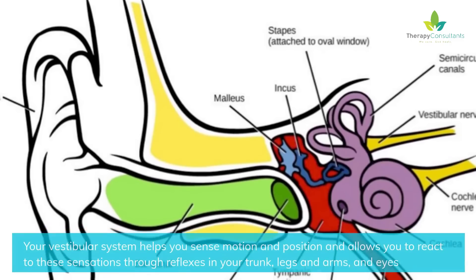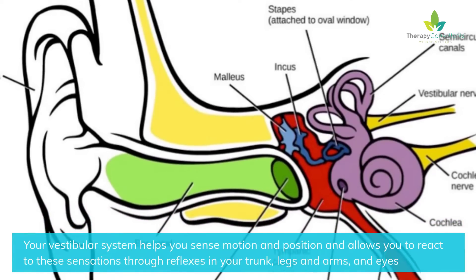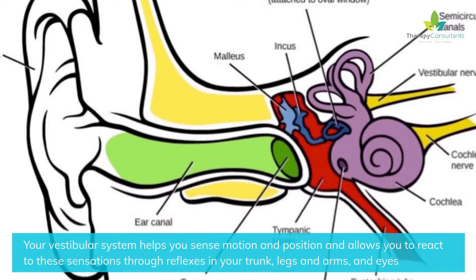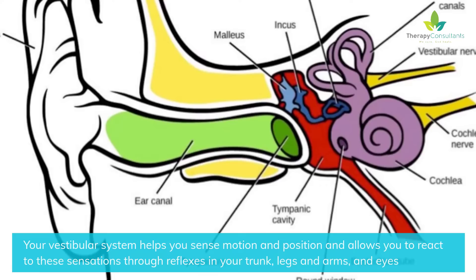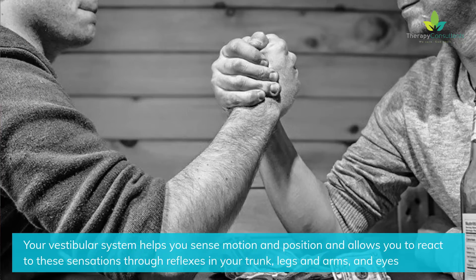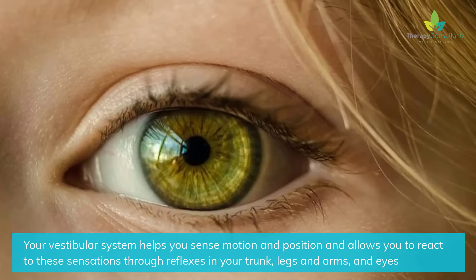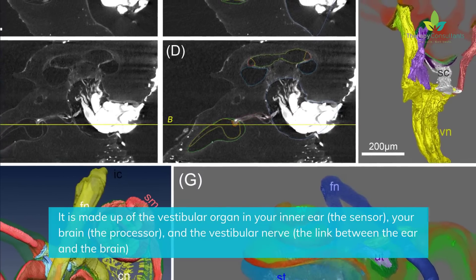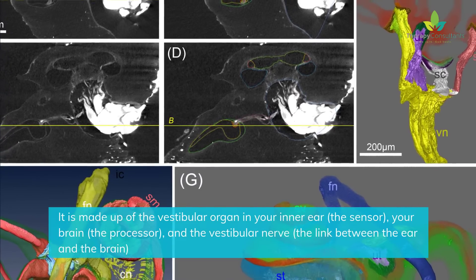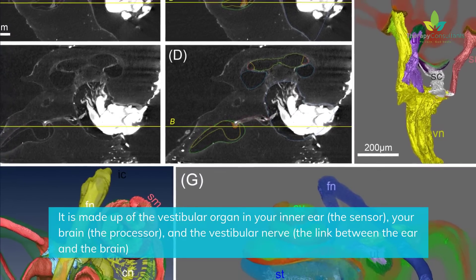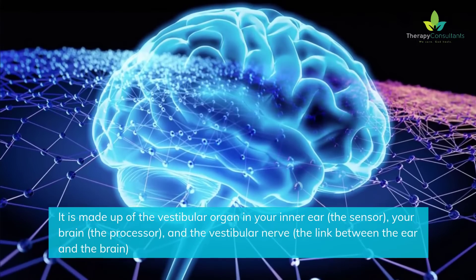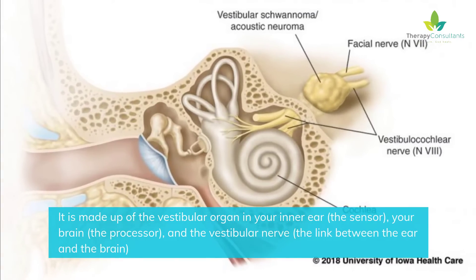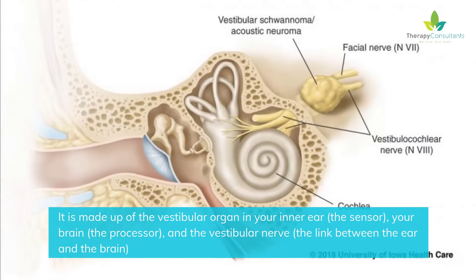Your vestibular system helps you sense motion and position and allows you to react to these sensations through reflexes in your trunk, legs and arms, and eyes. It is made up of the vestibular organ in your inner ear — the sensor — your brain — the processor — and the vestibular nerve, the link between the ear and the brain.